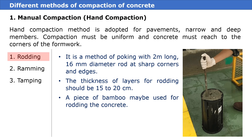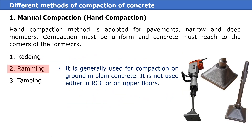Methods of hand compaction comprise of rodding, ramming, and tamping. Rodding is a method of poking with a 2-meter long, 16 mm diameter rod at sharp corners and edges. The thickness of layers for rodding should be 15 to 20 centimeters. A piece of bamboo may be used for rodding the concrete.